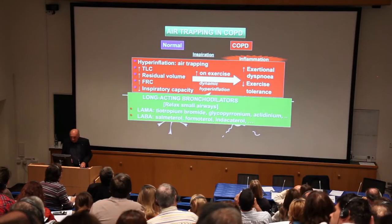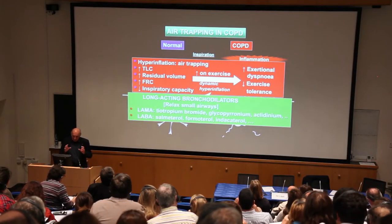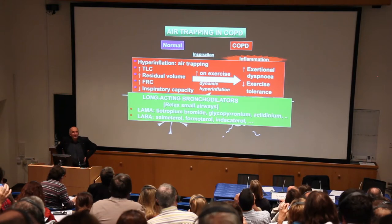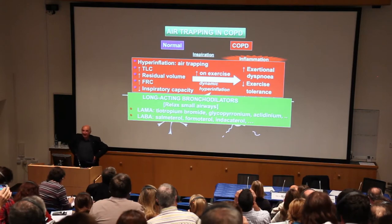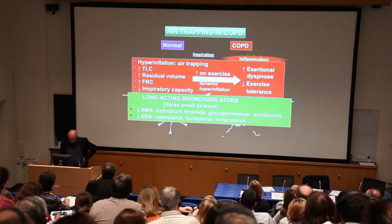Fortunately, there's something that we can do about this: relax small airways with long-acting bronchodilators. You have a choice between a long-acting muscarinic antagonist — the first drug being tiotropium bromide, but now there are others like glycopyrronium — or a long-acting beta agonist like salmeterol and formoterol given twice a day, or indacaterol, which is given once a day.